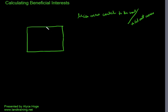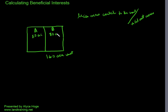So if we have two owners — Owner A and Owner B — and Owner A owns 80 acres and Owner B owns 80 acres. Owner A has a one-eighth royalty interest in the lease that they took from the mineral owners, and Owner B has a one-quarter royalty interest in the lease that they took from the mineral owner.